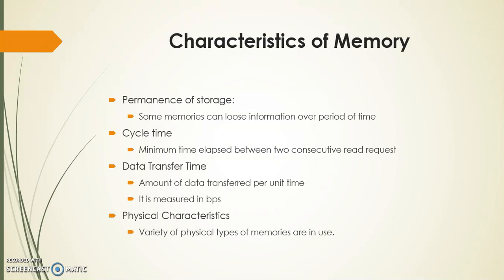Next is physical characteristics — in what technology the memories are manufactured. A variety of physical types of memory are in use. For example, semiconductor memory uses VLSI technology. Another physical type is magnetic surface memory, which is used for disk and tape manufacturing. These are the general characteristics of memory.